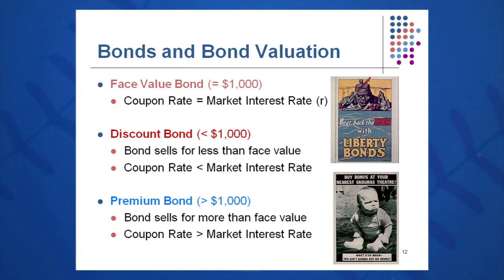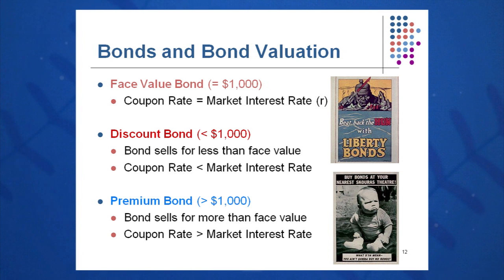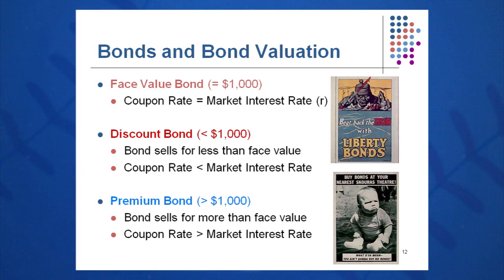A discount bond is where I sell my bond during the course of the 30 years and get less than a thousand dollars. What has happened? Market interest rates have gone up above my coupon rate. My bond is always going to pay $80, but if interest rates go above 8%, people will put their money where it's treated best — buying other bonds paying 9% or 10% — so I will get less than a thousand dollars for my bond. A premium bond is a bond selling for greater than a thousand dollars, where interest rates have gone down. If rates drop to 6%, my bond paying $80 a year is worth more than a bond paying $60 a year, so people will pay me more.